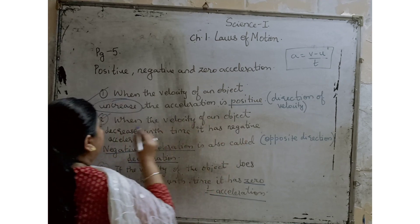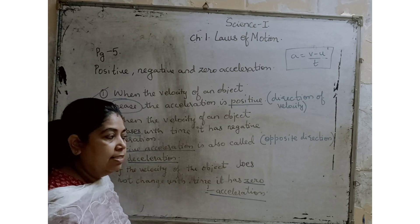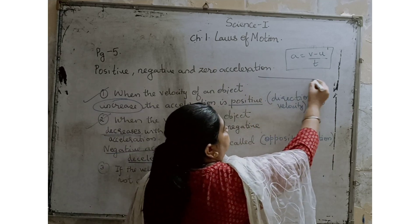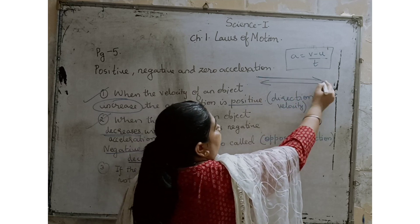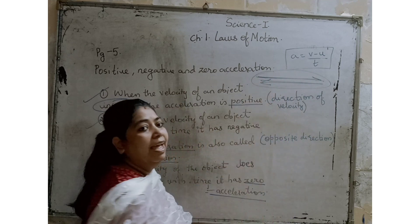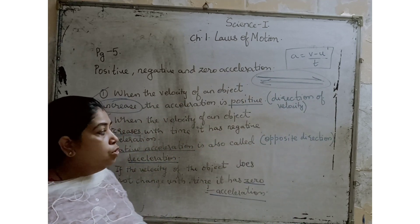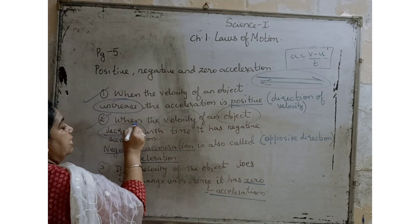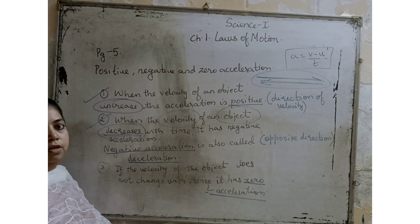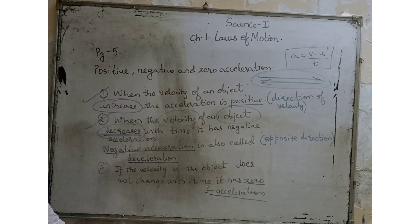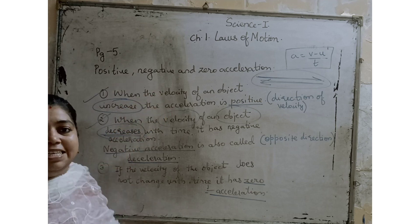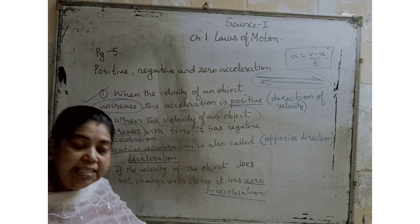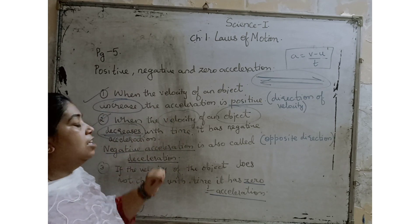The next important topic is negative acceleration. When the velocity of an object decreases, the acceleration is negative. The direction is opposite — for example, if one vehicle moves this way and another moves in the opposite direction, negative acceleration is acting. So when the velocity of an object decreases with time, it has negative acceleration. Increasing velocity is positive; decreasing velocity is negative.